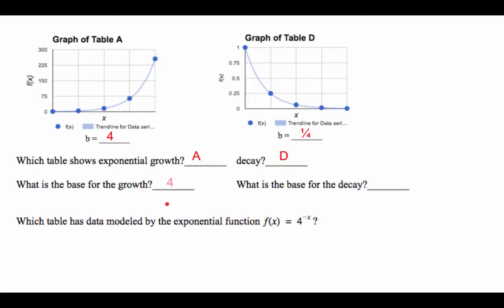The base for that was 4, and any time the base is greater than 1, we say that the exponential function is a growth function, exponential growth. What is the base for the decay? It turned out to be 1/4. And any time the base is between 0 and 1, it's called exponential decay function.